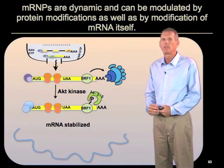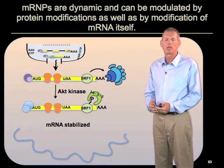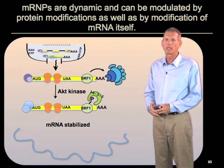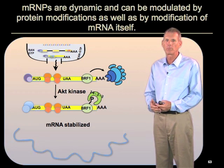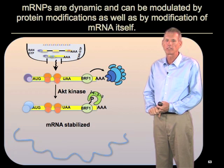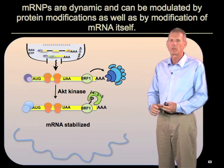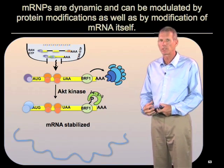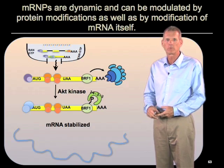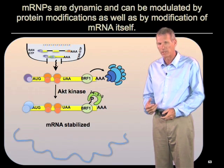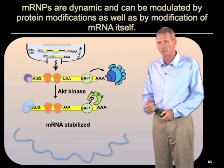These RNPs are dynamic and are modulated by many types of transitions, both in composition and modification, as well as modification of the RNA itself. We can't think of the RNA-protein complex as a static structure — we have to think of it as one that's constantly under flux at many different levels of control.